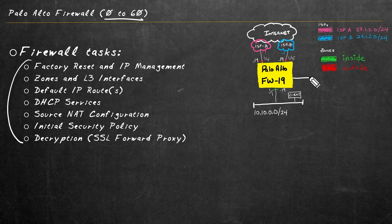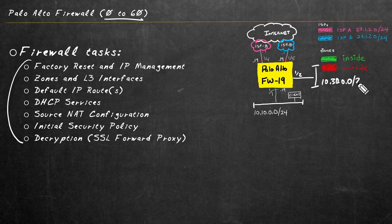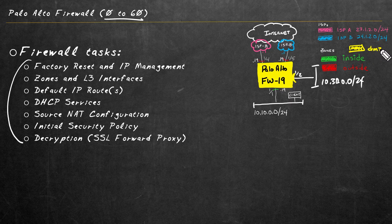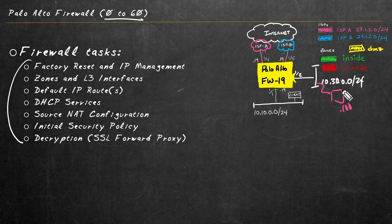Let's imagine we have an additional interface that we're using — let's go ahead and use 1/2. We'll connect that to the network 10.30.0.0 with a 24-bit mask, and associate that with a zone called the DMZ. We'll put a server there at .100 — a Windows server running IIS, providing basic web services. Its address is 10.30.0.100.